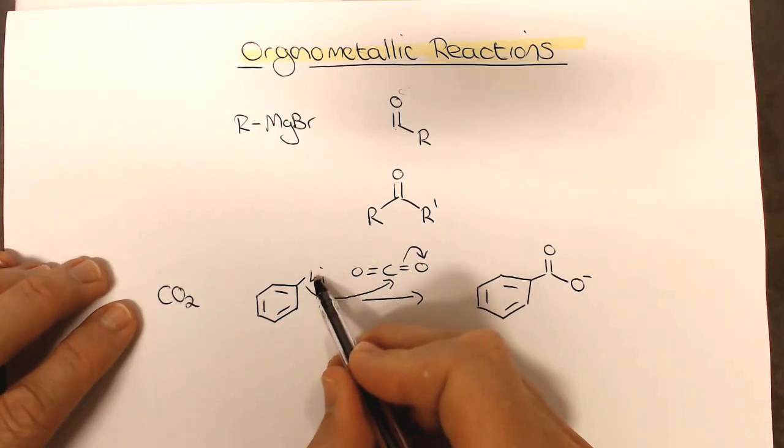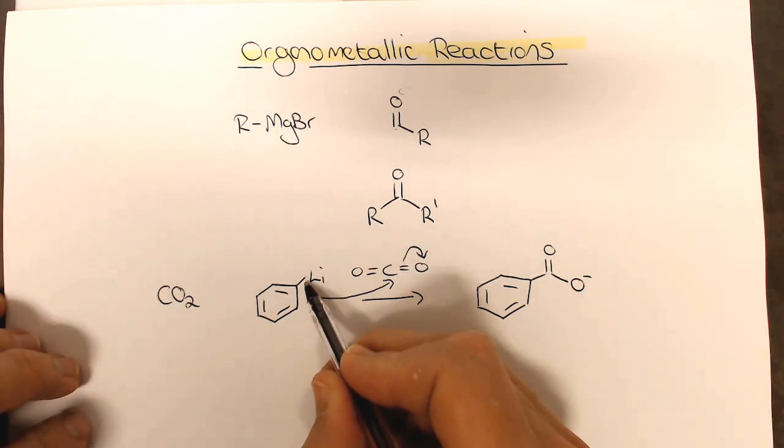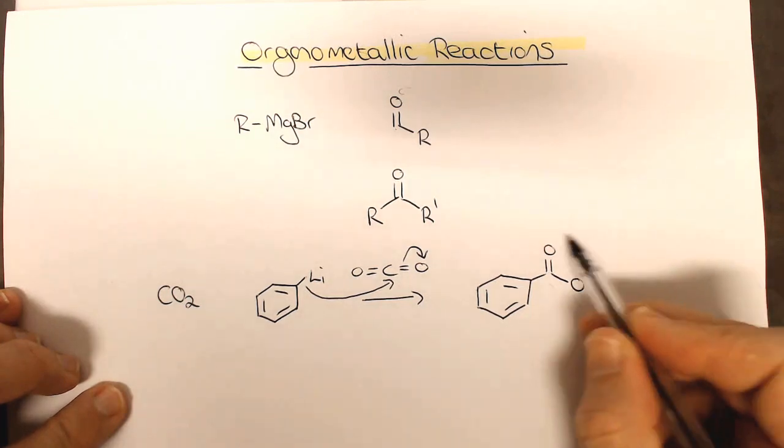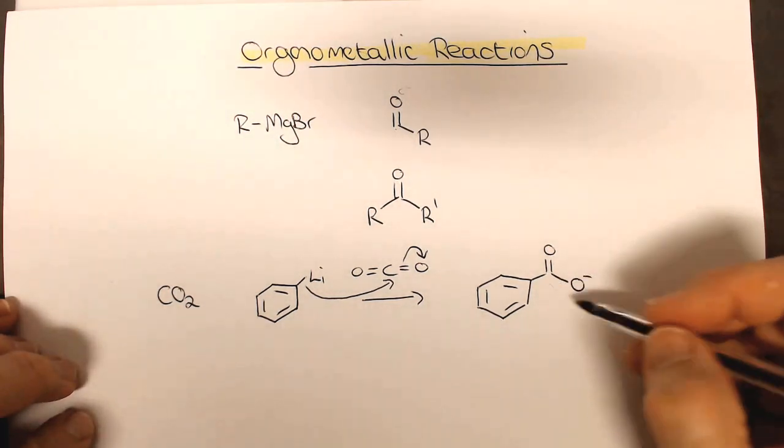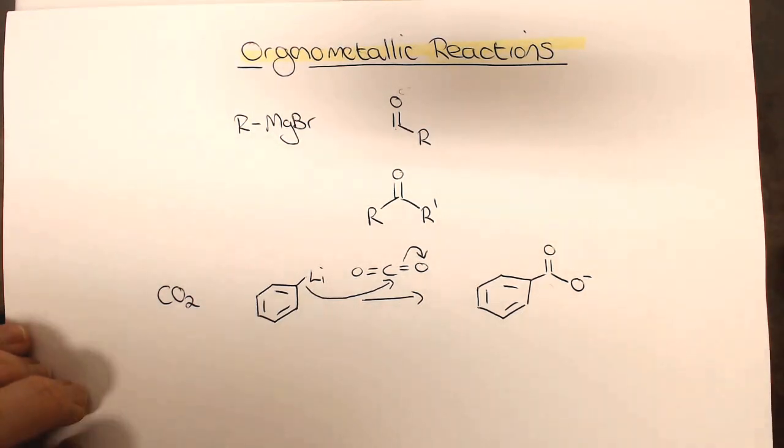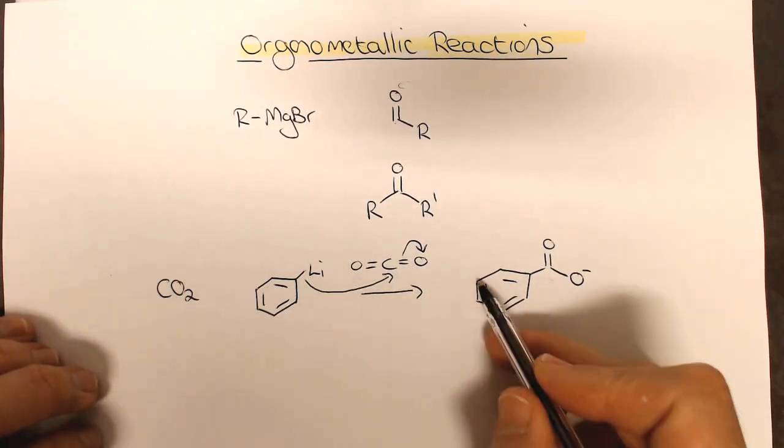Because what we've effectively done, remember this organometallic reagent would have come from, for instance, a chlorine or bromine being there. And so what we've done is we've added a new carbon bond in quite a high oxidation level carboxylic acid, which we can then functionalize. We could reduce this, we could make it into an ester or an amide. These are reactions we'll see later on in the course. But this is an incredibly useful tool.